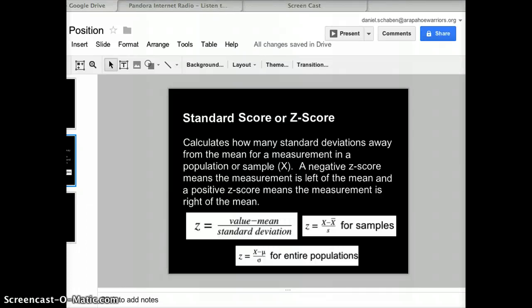Standard score or z-score calculates how many standard deviations away from the mean a measurement is in a population or sample. We call that measurement x. It could be any measurement in the sample.